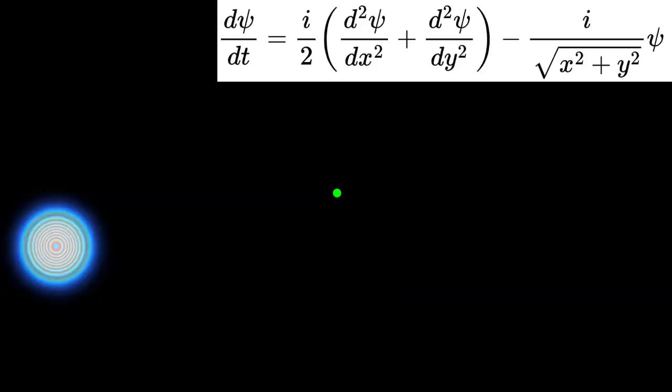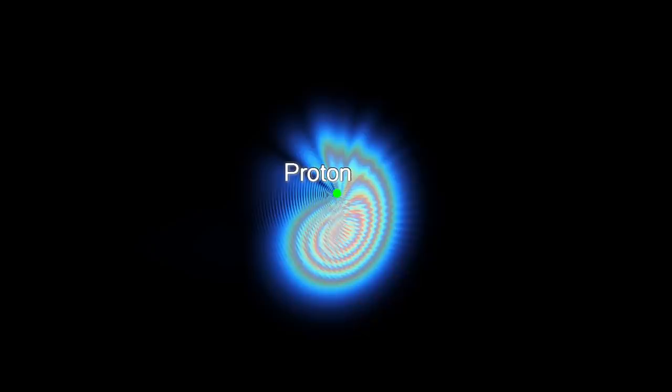The next step is to add a nucleus to the picture. In the real world, most electrons are in atoms. Atoms have a nucleus and an electron. We can add the nucleus, or at least the electric field of the nucleus, by adding something to the Schrödinger equation.